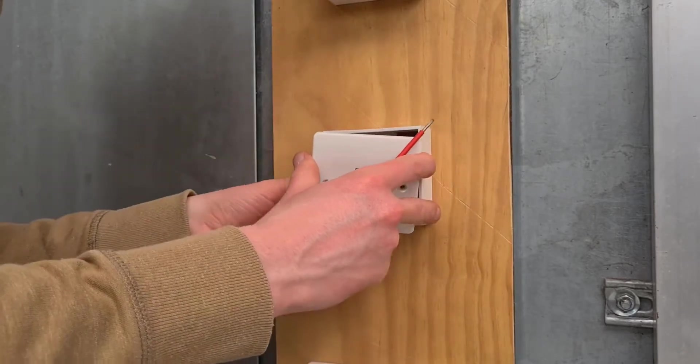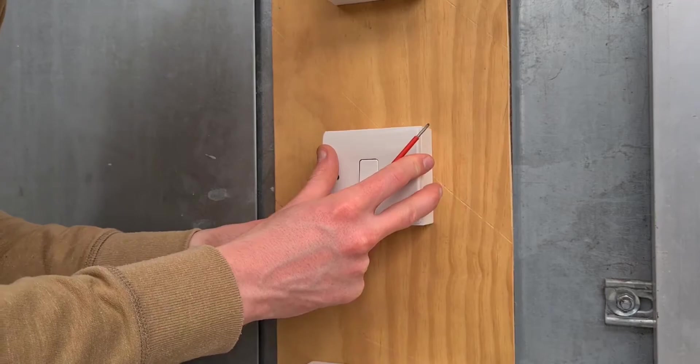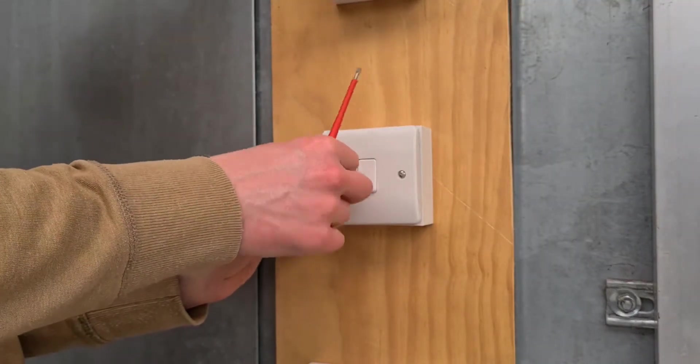Carefully move cores into the surface box and align the switch plate. Place screws into the holes and tighten screws until the switch is fixed to the surface box.